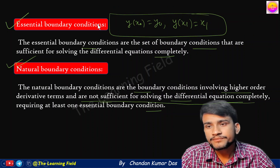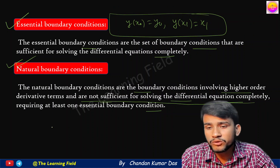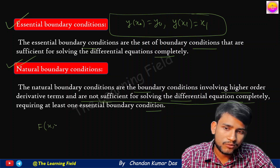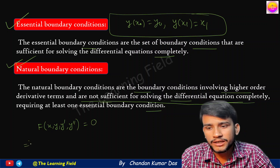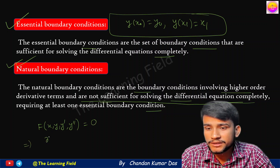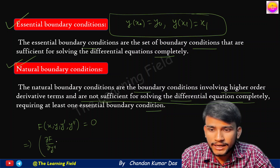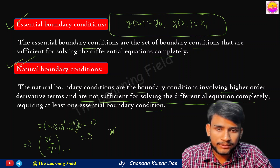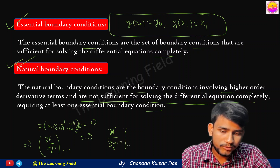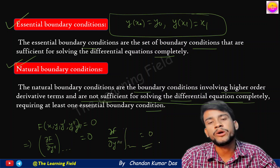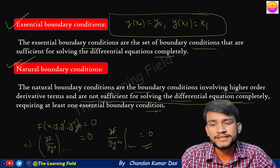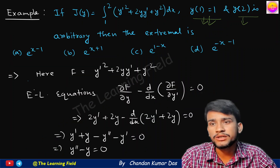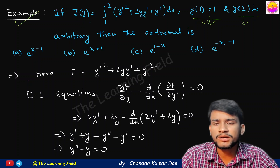One more thing: if f = f(x, y, y', y''), then we also get the natural boundary condition ∂f/∂y'' = 0 at the end points. If f contains even higher order terms, then it extends to ∂f/∂y''' = 0 and so on at the end points. These are the cases of natural boundary conditions.